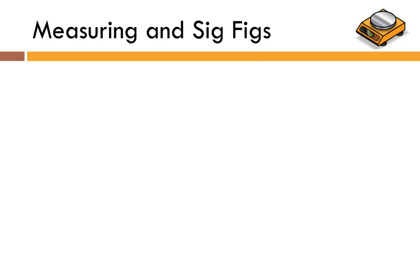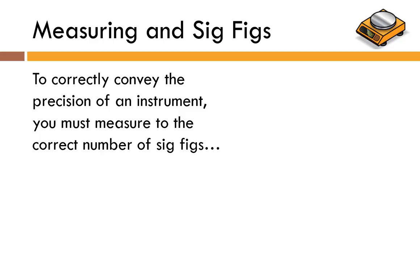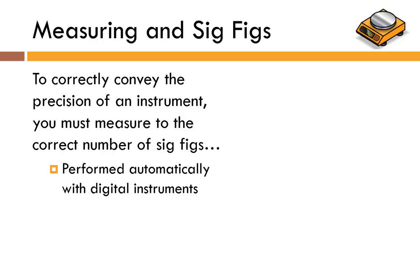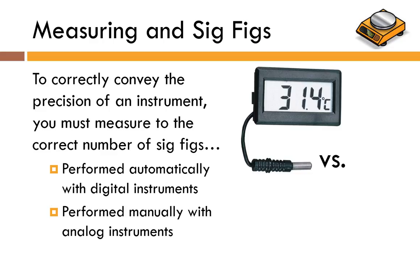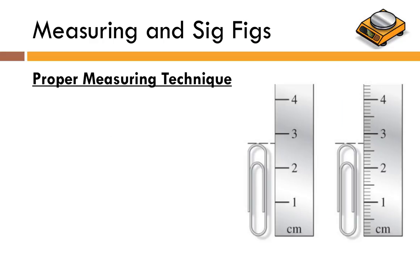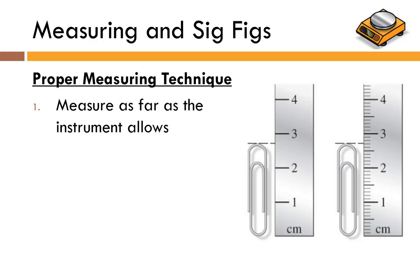Let's move on to measuring and significant figures, which will play a huge role in the lab. To convey the precision of the instrument we have to express a measurement to the correct number of significant figures. With digital instrumentation this is done automatically. With analog instruments — like an old-school thermometer or a graduated cylinder — you have to make this estimation manually. You have to look at where the liquid level is and make the judgment call. So let's talk about proper measuring technique with these two rulers.